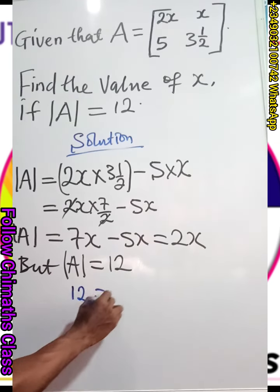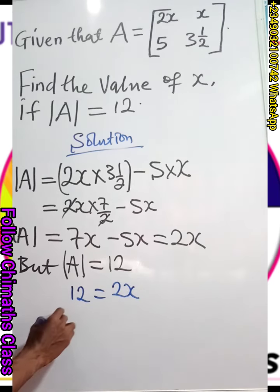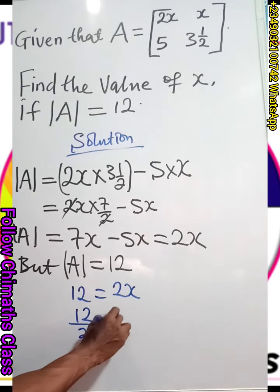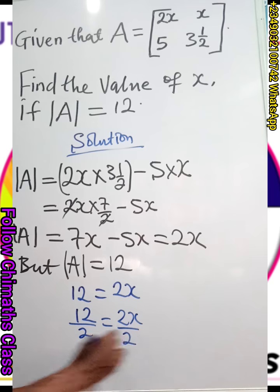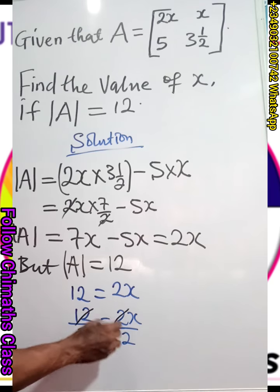12 equals 2X. Divide both sides by 2, you have 12 divided by 2 equals 2X divided by 2. These cancel.